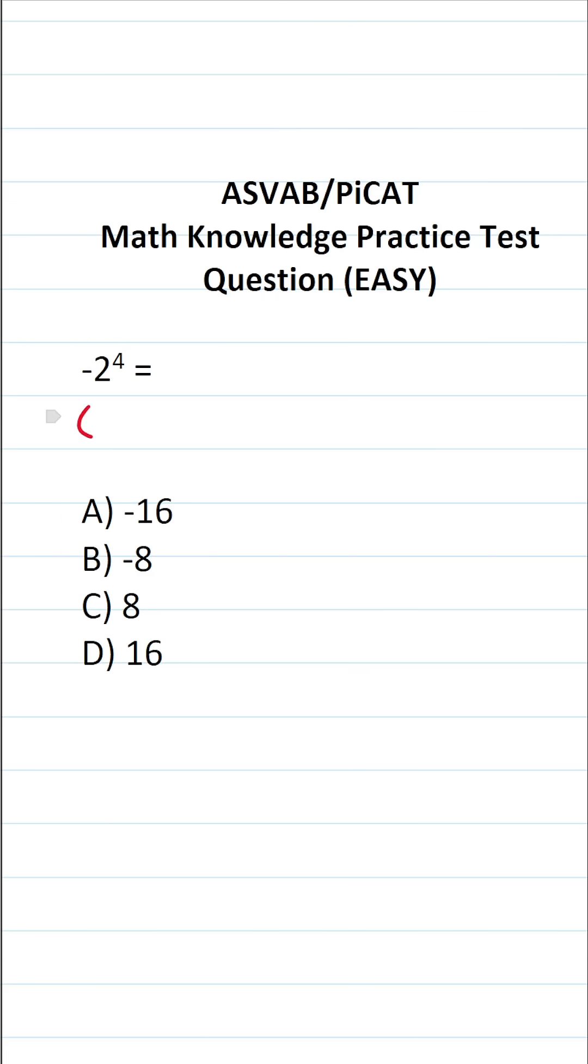The best way to understand how to solve this one is by comparing it with this question: What is negative 2 to the fourth power? You have to pay very close attention to where the negative sign is. In this first example, I can factor out a negative 1, so this becomes negative 1 times 2 to the fourth power, and this becomes negative 1.